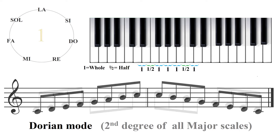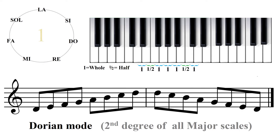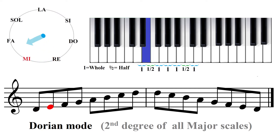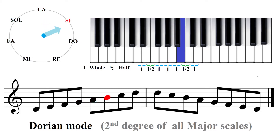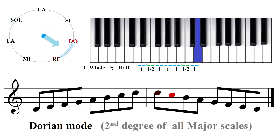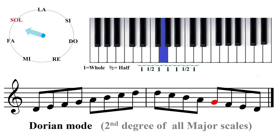Moving up to the second degree of Do major, sing the Dorian mode starting on Re. Re, Mi, Fa, Sol, La, Si, Do, Re. Re, Do, Si, La, Sol, Fa, Mi.